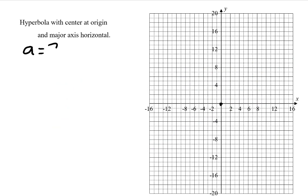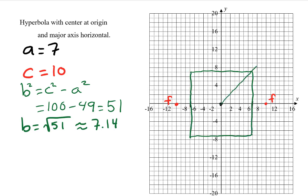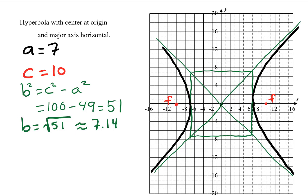In the next example, a is still 7, but now c equals 10. The foci are 10 spaces to the left and right of the center. b squared is c squared minus a squared, giving us 100 minus 49, which is 51. b is the square root of 51, approximately 7.14. The top and bottom of the central rectangle are 7.14 spaces above and below the origin. We draw lines through the corners to get the asymptotes, and each branch touches the center of one side of the rectangle and approaches the asymptotes. The eccentricity is 10 over 7, or about 1.43.